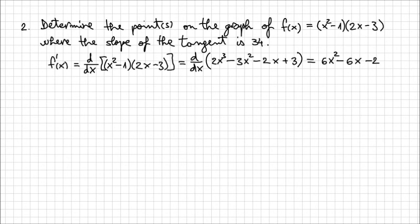So now, if I'm looking back in the problem, I see that I'm looking for the points on the graph of this function where the slope of the tangent is 34. So I need to find those points where this expression that we just determined for the derivative of f(x) is equal to 34.